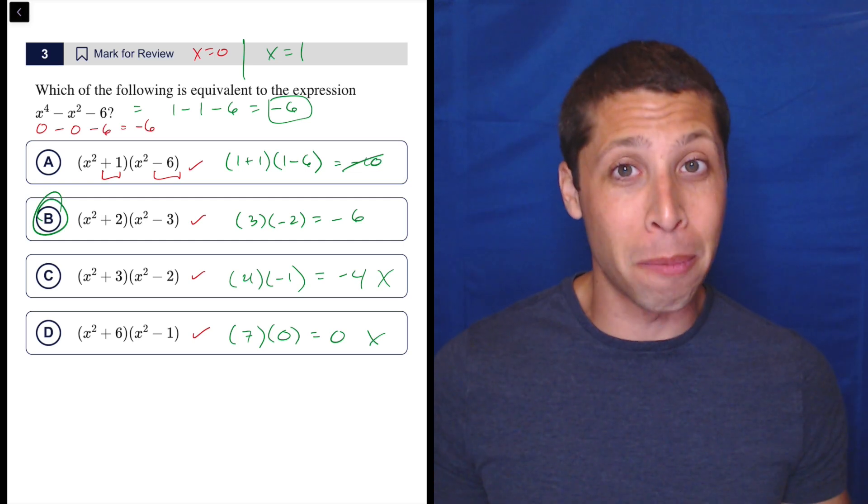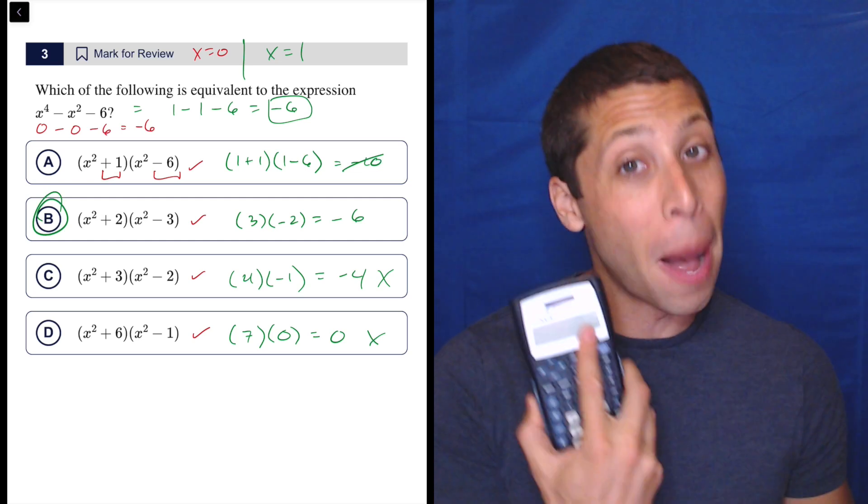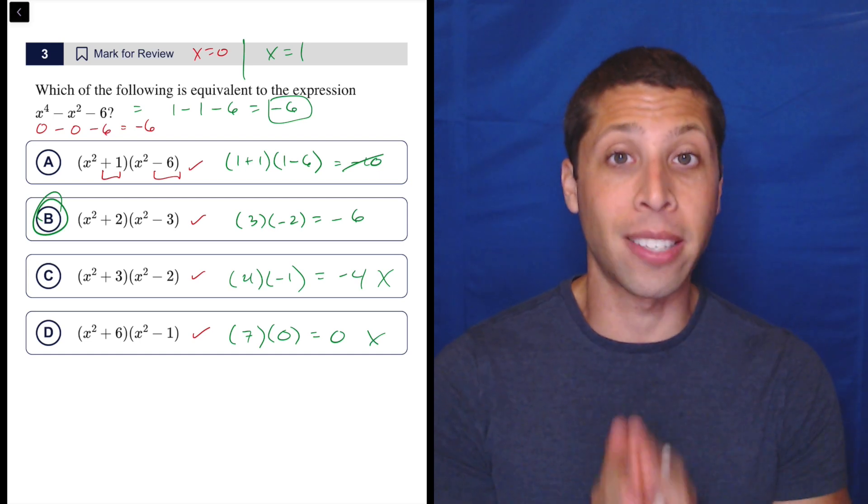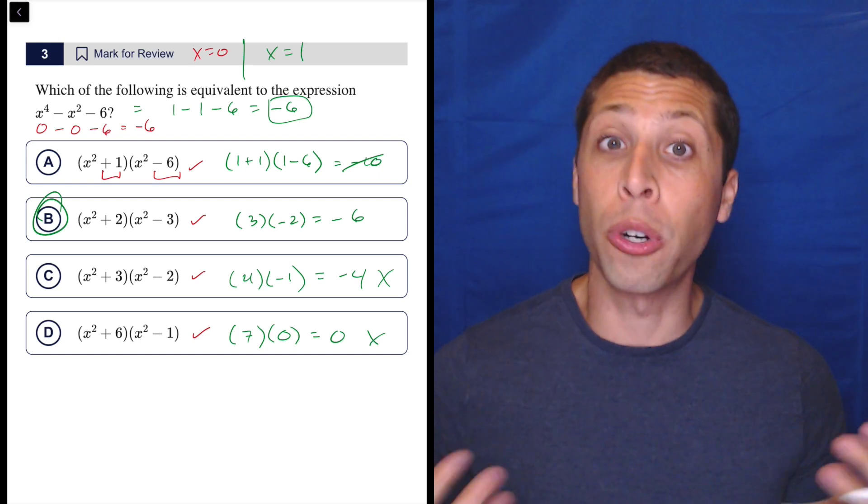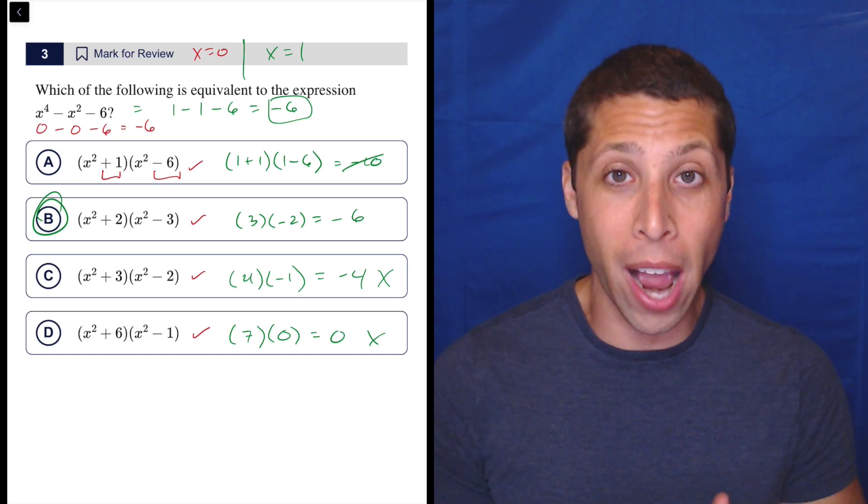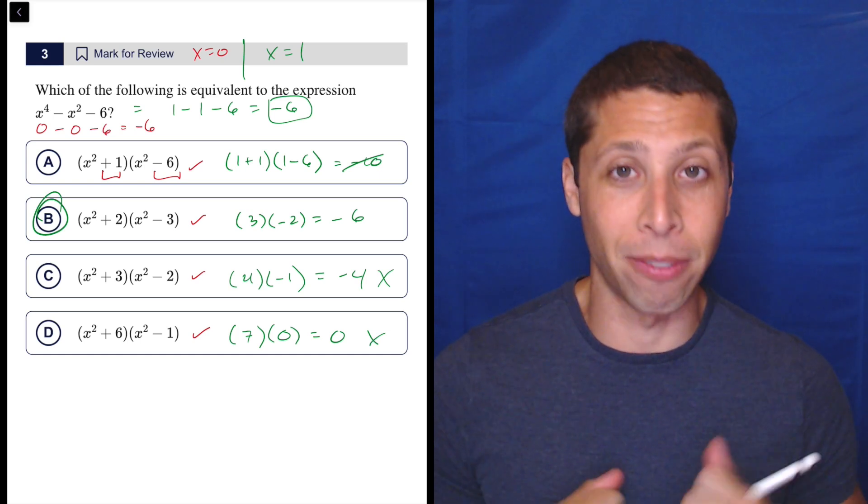By getting rid of the variables, we only have to worry about the numbers and that's easier because we can also pop that in a calculator if we absolutely need to. So this is definitely a case where on a test I would have arithmetized. I'm too nervous that I'm going to factor this thing incorrectly. I would much rather have the real concrete proof that I'm right using numbers instead of letters.